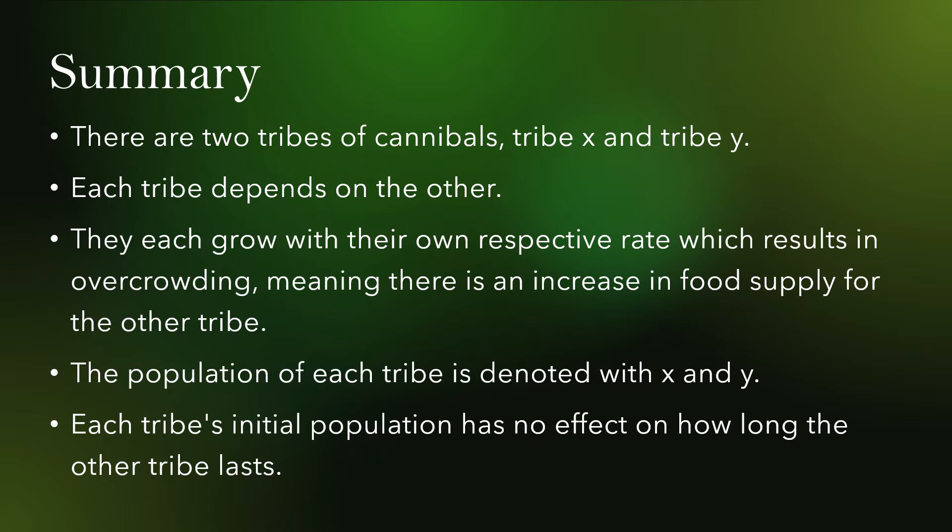Each tribe grows according to their own respective rate that results in overcrowding. The increase in population also means that the opposing tribe has an increased food supply. This factor is considered and is denoted by the cooperation parameter. Both tribes are susceptible to overcrowding in their own areas, but do not encroach upon the territory of the other so as to not affect each other's factors. The loss of one tribe's members correlates to the food supply of the other. Therefore, the cooperation and harvesting parameters are linked to the same encounters between the two tribes.